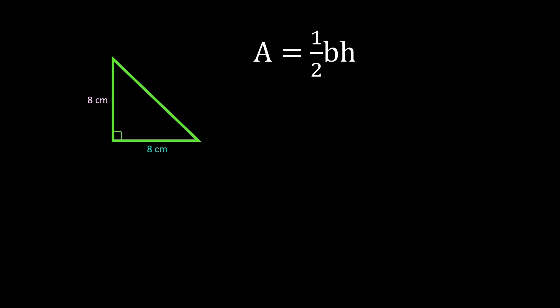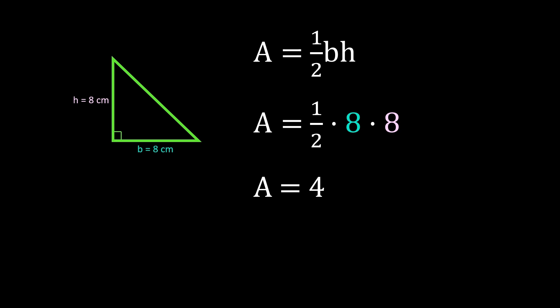In this example, we're finding the area of this right triangle using the formula area equals one-half times the base times the height. The base of this triangle is 8 centimeters and the height of this triangle is 8 centimeters. So we'll have area equals one-half times 8 centimeters times 8 centimeters. Remember, multiplying by one-half is the same as dividing by 2, so 8 times one-half is 4.